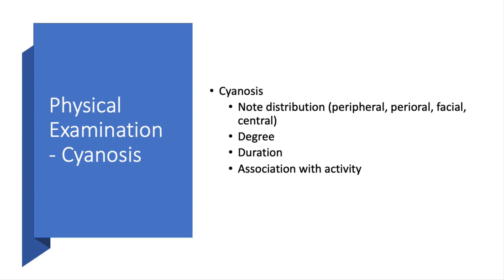Cyanosis is a very late sign of a respiratory problem in a child and should be taken very seriously. We want to know if it is peripheral or central, how bad the cyanosis is, and how long it has been there. If it is associated with activity, that is telling us there may also be something wrong with their cardiac output.